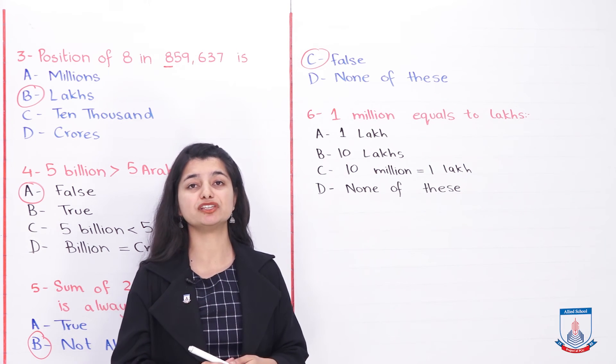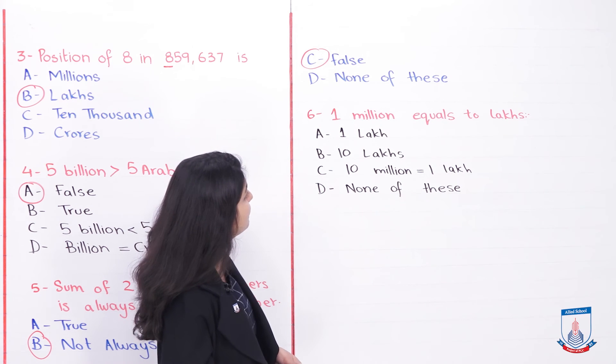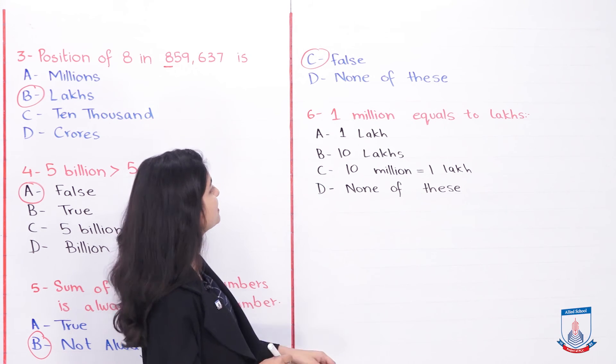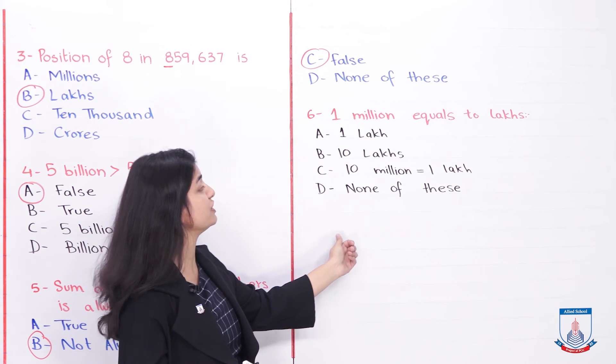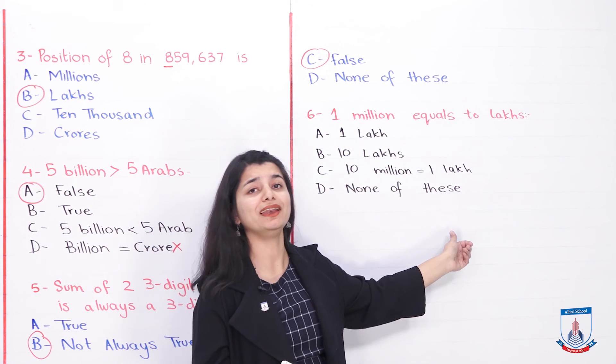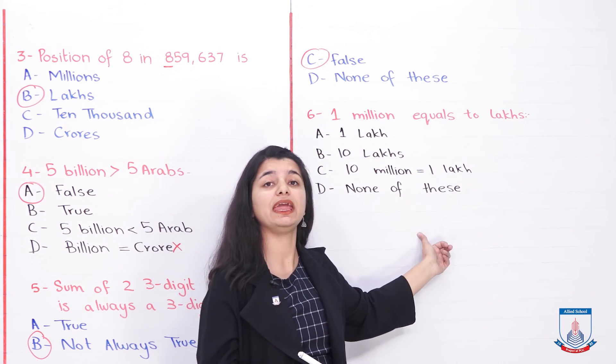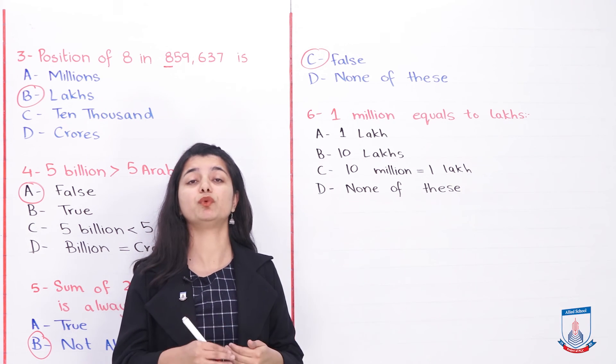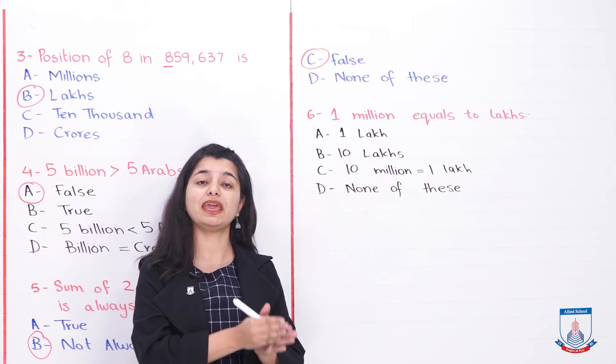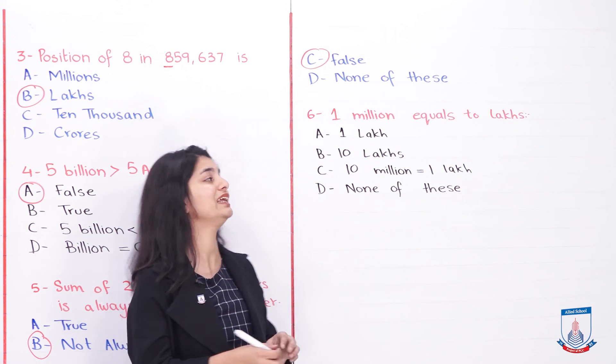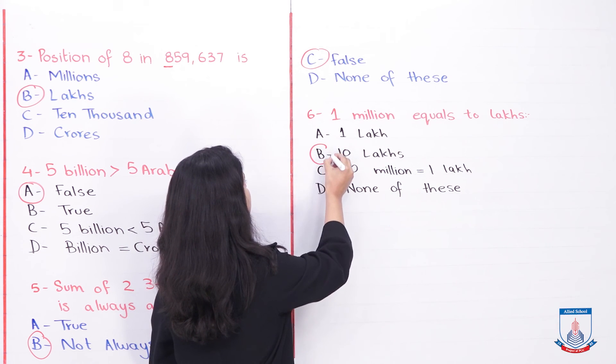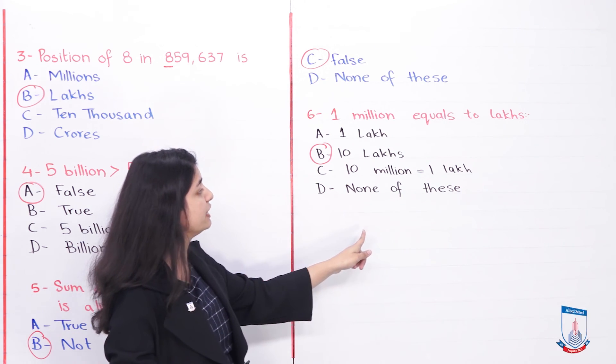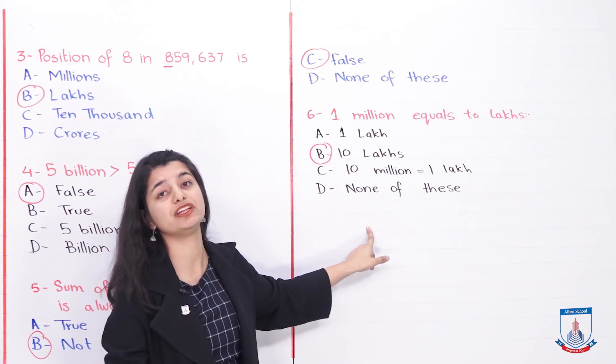What is the last multiple-choice question? One million equals to lakhs. What is the value of one million in lakhs? The options are: one million equals one lakh, one million equals ten lakhs, ten million equals one lakh, and none of these. One million is equal to ten lakhs. If you use your table or ask an adult, you will easily know that the value of one million is approximately ten lakhs. We can circle the B part and say ten lakhs. One lakh is not the value of one million. Ten million is not the value of one lakh. And we will not use none of these.